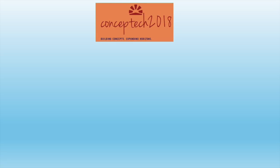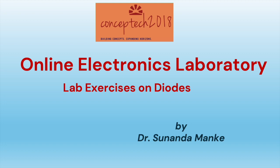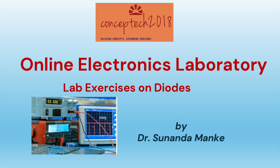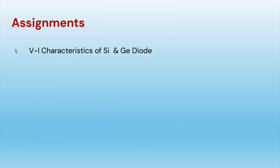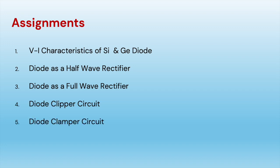Hello students, welcome to my channel Concept Tech 2018. I am Dr. Sonal Laman K and this video is part of the series on online electronics laboratory. In this part, we will take lab exercises on diodes. The assignments include the VI characteristics of silicon and germanium diode, working of diode as half wave and full wave rectifier, diode used as clipper and clamper, and lastly, Zener diode working as voltage regulator.